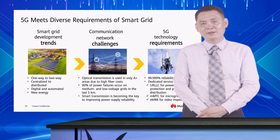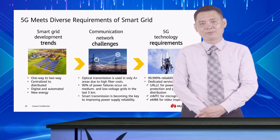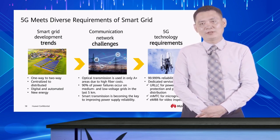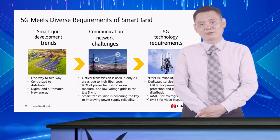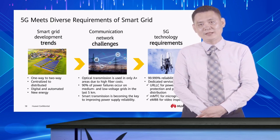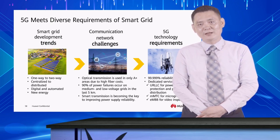Currently, the power grid communication network also faces some challenges. Optical fibers can only be used in the production areas to ensure high reliability while controlling cost. In actual scenarios, 90% of power failures occur on low-voltage grids in the last 5 km. The power grid communication network must have a reliability of 99.999%. In addition, network slicing is needed to meet the differentiated requirements for power grid services such as high reliability, massive connectivity, and larger bandwidth.